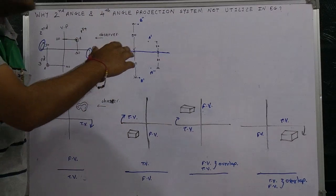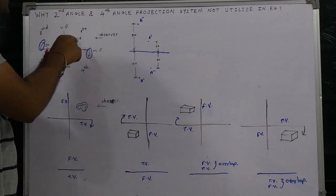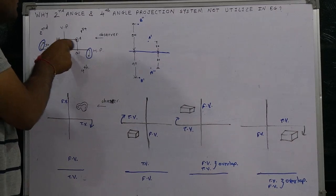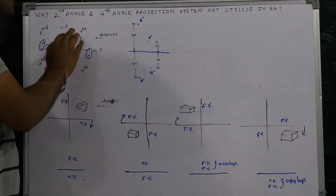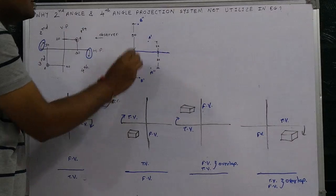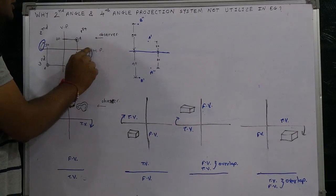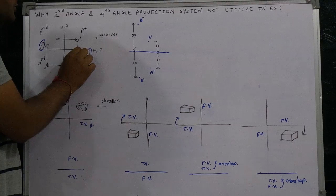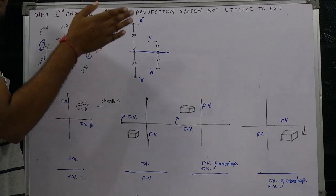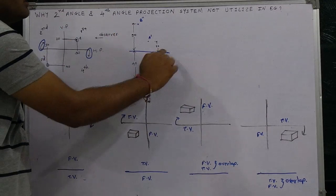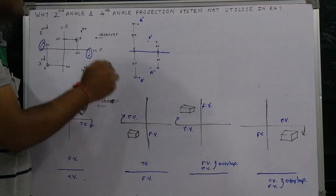To understand these things, you need to understand the phenomena behind the projection of a point. I am taking a point at 30 mm distance from the vertical plane and 20 mm distance from the horizontal plane. The main phenomena of the projection of a point is horizontal plane rotation — whatever will be the projection of the point on the horizontal plane must be rotated in a downward direction.